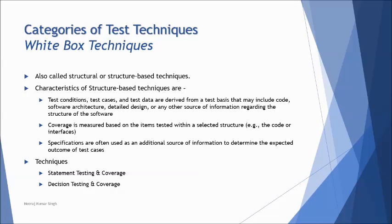Generally, you will be provided with a fragment of code, which might be a pseudocode, and you try to derive the minimum number of test cases to achieve 100% coverage. There is a formula for how you measure coverage and determine what percentage is achieved — we'll look into those details when we come to the techniques. We have two techniques in this category: Statement Testing or Coverage, and Decision Testing or Coverage.